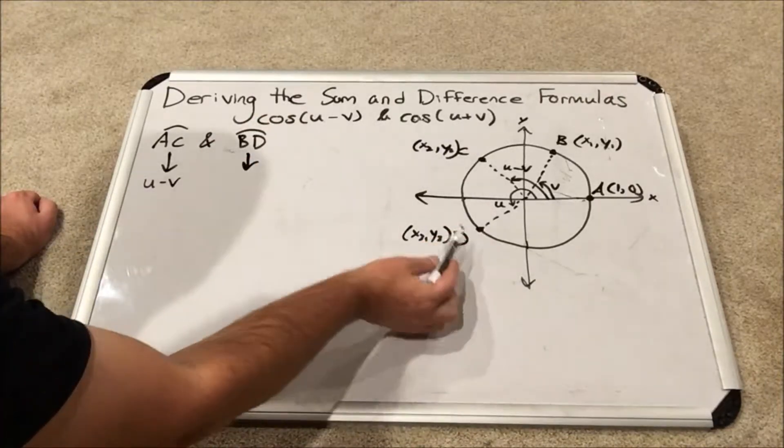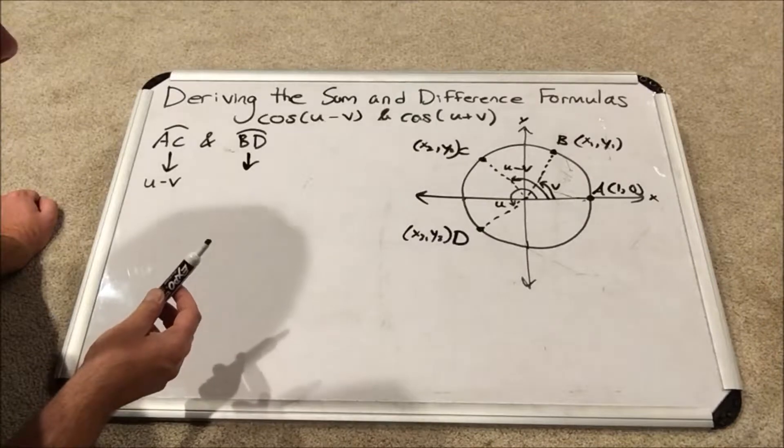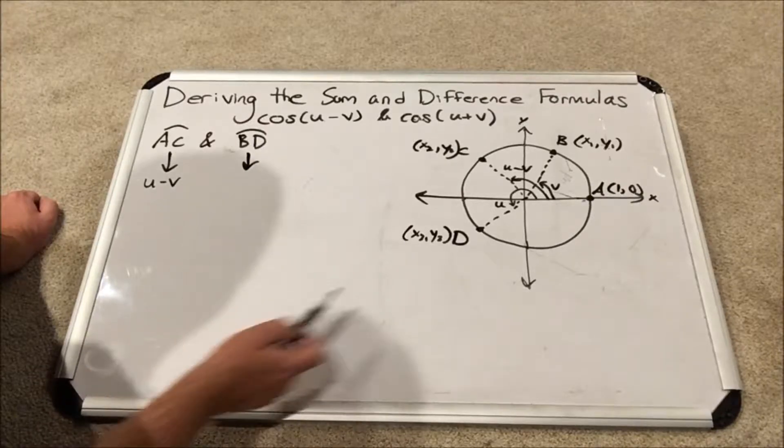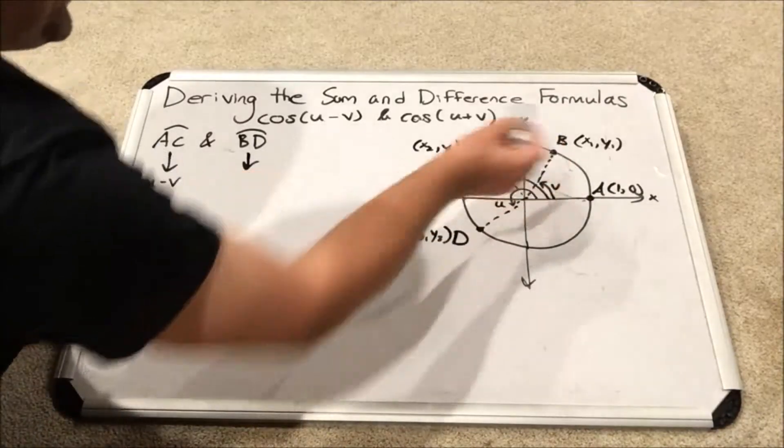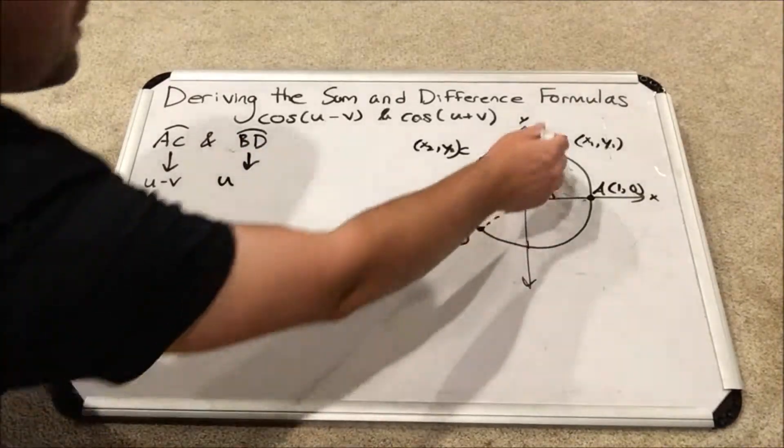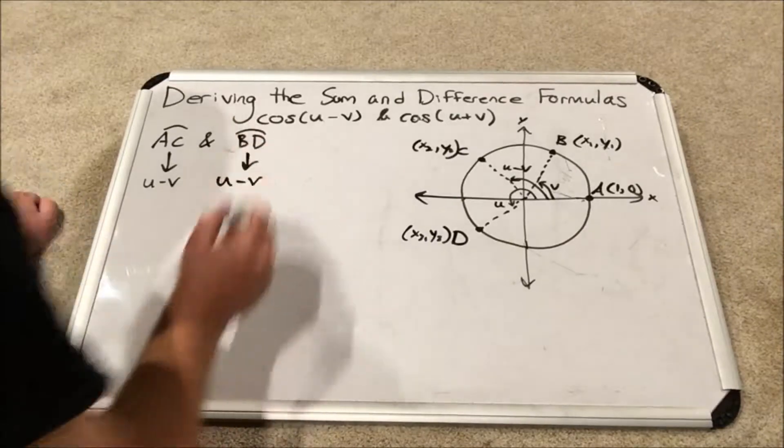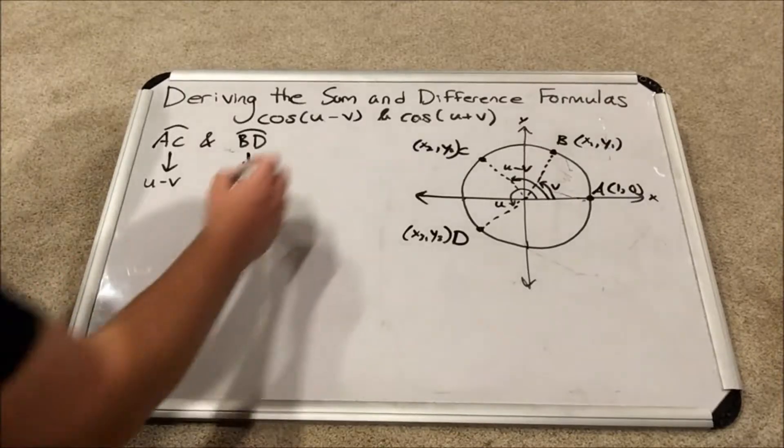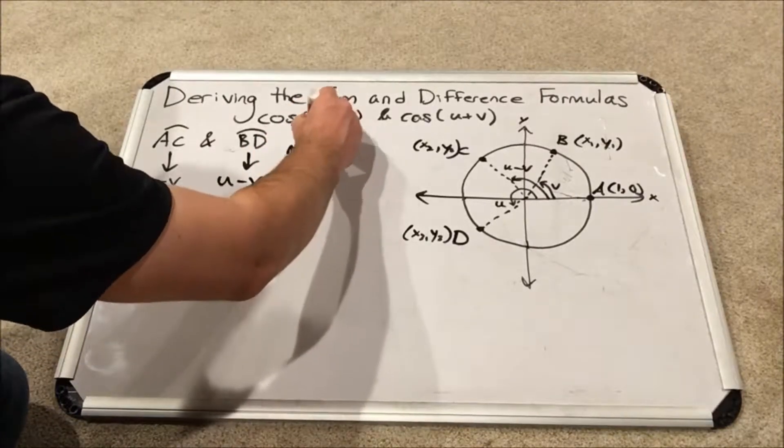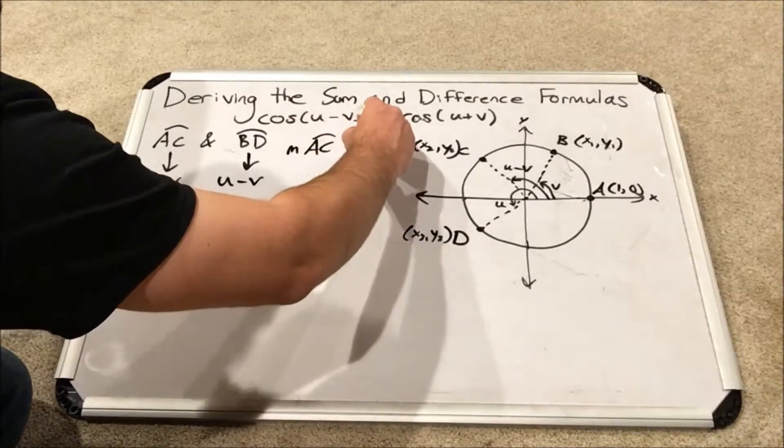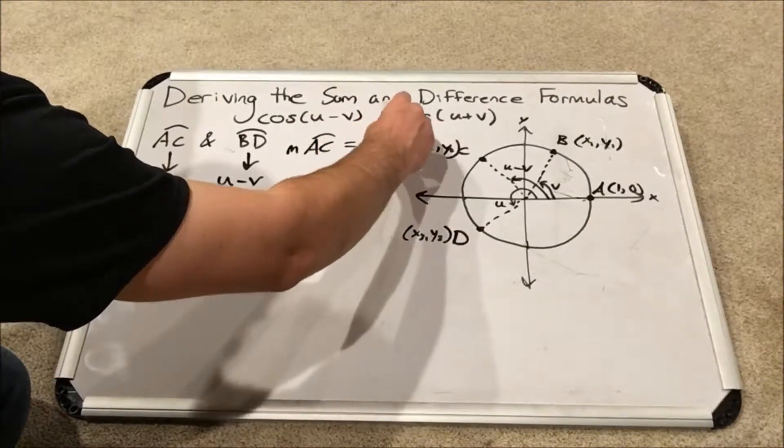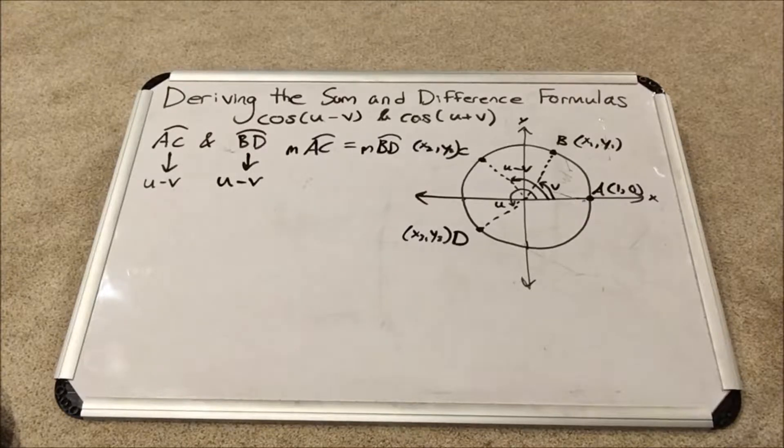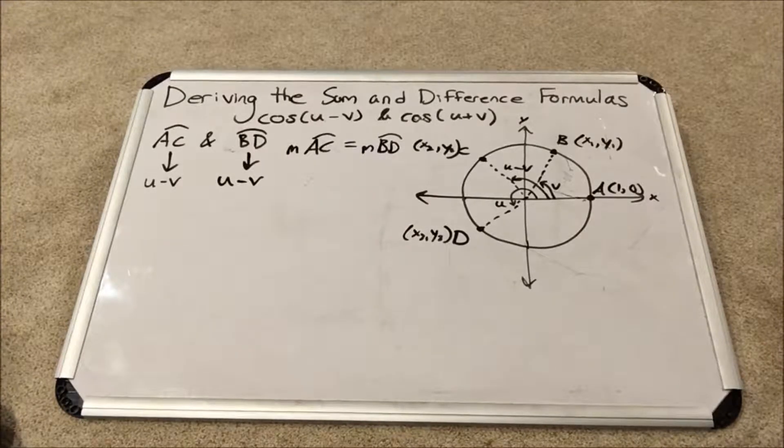Notice how these two arcs have the same angle measure. So that means the measure of arc AC is equal to the measure of arc BD. Now what I mean by that is the angles specifically. Now I have something else to show you that is a direct result of this. And that is these two chords here. The chord from A to C, and the chord from B to D. I'm going to highlight those with solid lines.